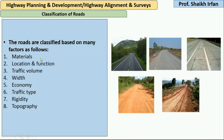Roads are classified based on many factors, such as materials — for example, bituminous road, concrete road, murum road, or gravel road. Then location and function, traffic volume, width, economy, traffic type, rigidity, and topography. But in this video, we will be focusing completely on classification of roads based on materials only, and the rest of the types will be seen in our next videos.